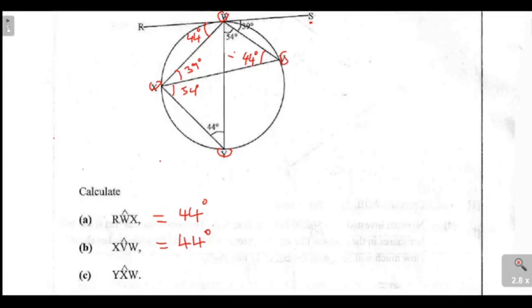Now, we come to the last question. Calculate YXW. So here, they want an angle which is right here. So to find an angle which is right there, you can see, here you have a 54. Here you have a 39. So what you do is, just add those two angles. Then you come up with the angle which is the whole angle which is at X.